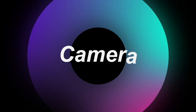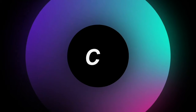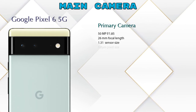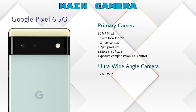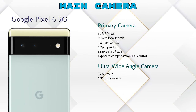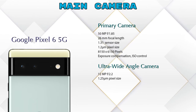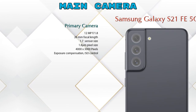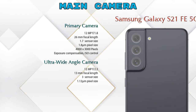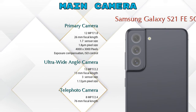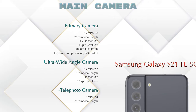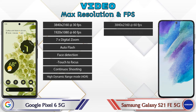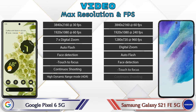Let's see the details about our favorite feature: cameras. For the rear camera, the Pixel 6 5G has two cameras — a primary camera and an ultra-wide angle camera. The S21 FE 5G has three cameras — a primary camera, an ultra-wide angle camera, and a telephoto camera. For video, the Pixel 6 5G has 8 modes and the S21 FE 5G has 9.